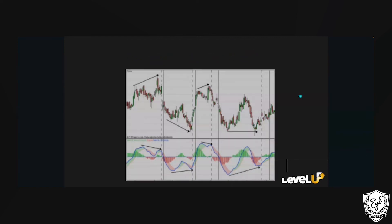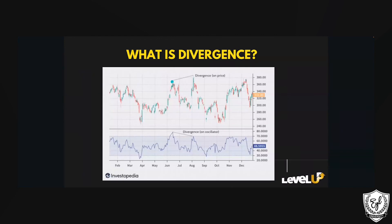Here's one more example — divergence going up, the oscillator going down. And what do we see? A perfect trend reversal. So here's a question: what is the criteria, what are the things you're looking for to be able to identify a divergence when it comes to price action? Drop it in the chat, come off mute, raise your hand.